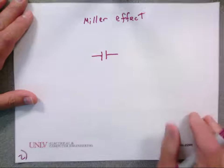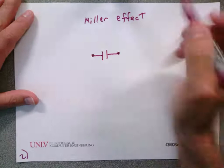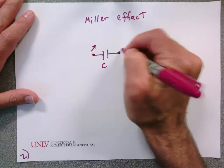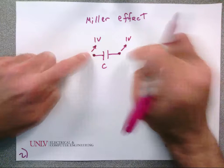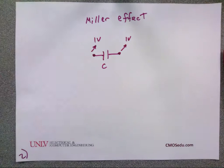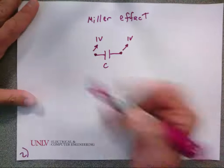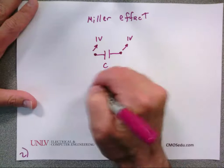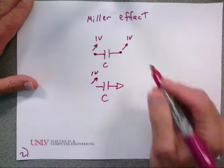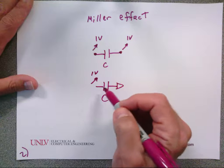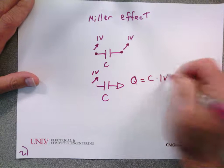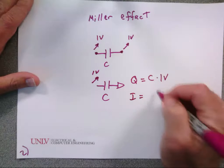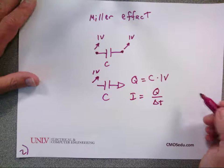First off, if I have a capacitor and I take both sides and move each side's voltage up by one volt, how much current flows and why? Zero — because there's no voltage change across the capacitor. Now, if I hold one side at ground and move the other side up by one volt, the charge is C times one volt, and the current is Q over the time it takes to move that voltage.